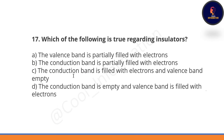Which of the following is true regarding insulators? Option A: valence band is partially filled. Option B: conduction band is partially filled. Option C: conduction band is filled with electrons and valence band is empty. Option D: conduction band is empty and valence band is filled. Correct option is C — conduction band is filled and valence band is empty.